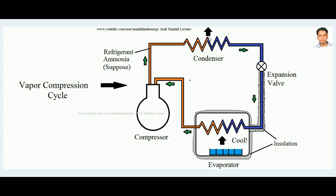In the condenser, the ammonia loses its latent heat to the atmosphere and becomes liquid. The refrigerant enters the condenser in vapor phase and, passing through it, ultimately becomes liquid by losing the latent heat of vaporization. This compressed refrigerant then passes through the expansion valve, where pressure reduces, and the ammonia reaches the evaporator.